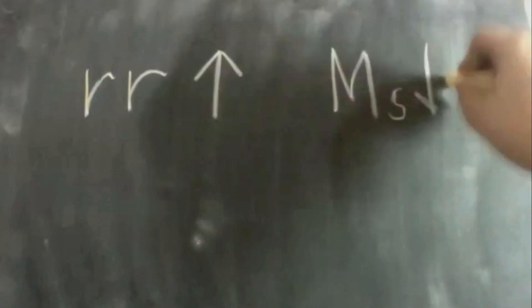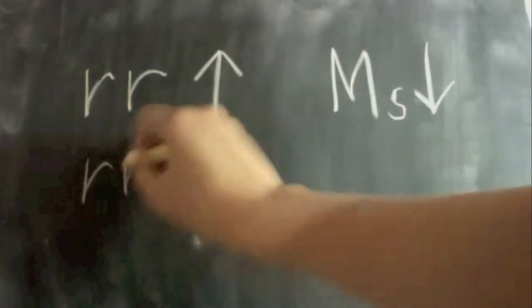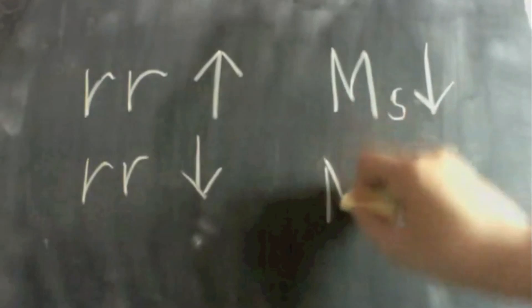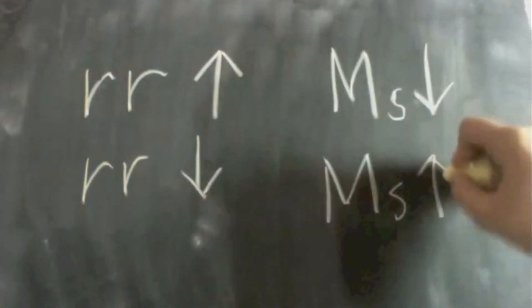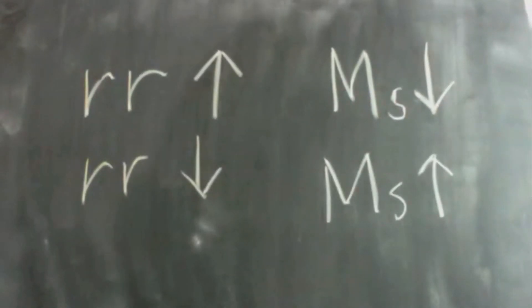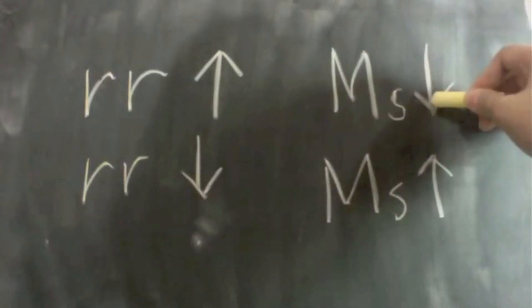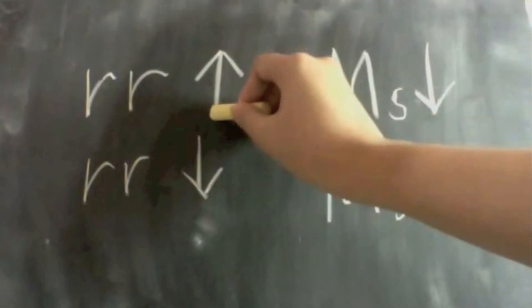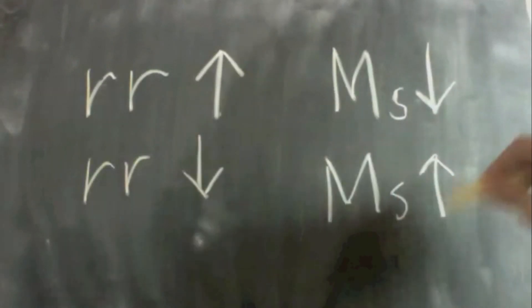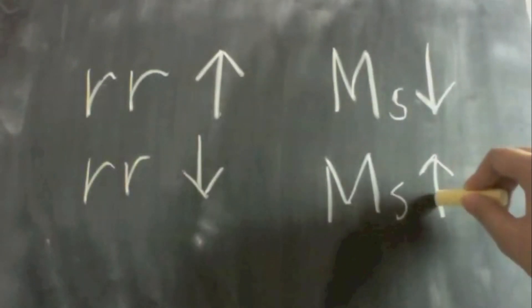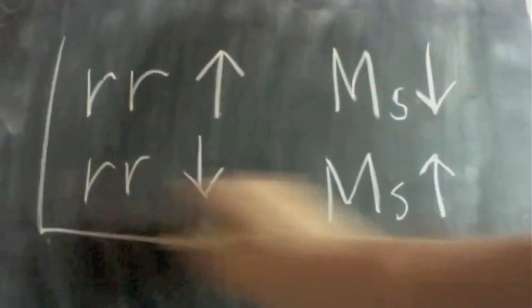The relationship between your Reserve Requirement and your Money Supply is this: the higher the Reserve Requirement, the lower the money supply, while the lower the Reserve Requirement, the higher the money supply. So if the Banco Central wishes to lower the money supply, it will implement a higher Reserve Requirement, while if it wants to increase the money supply, it will decrease the Reserve Requirement.